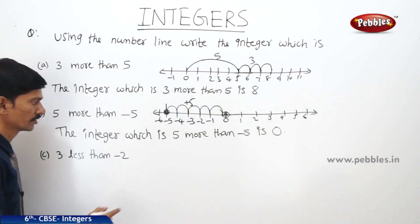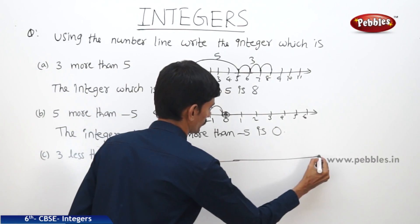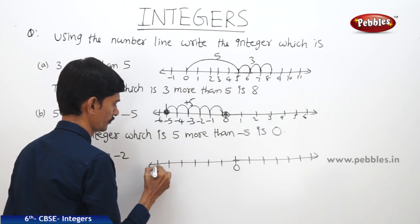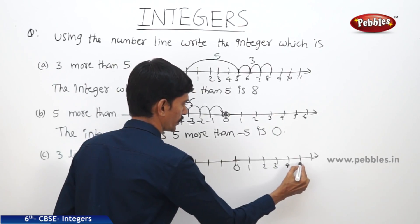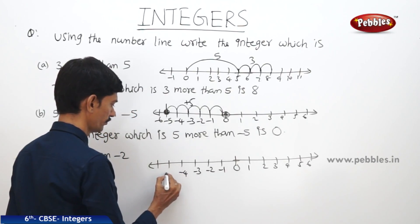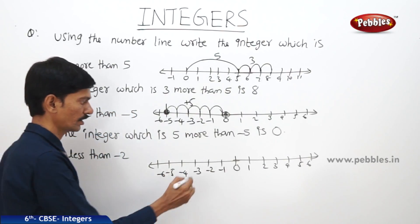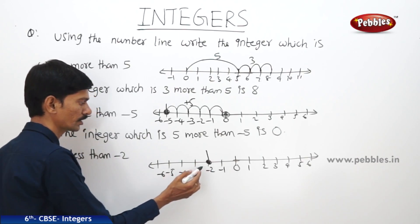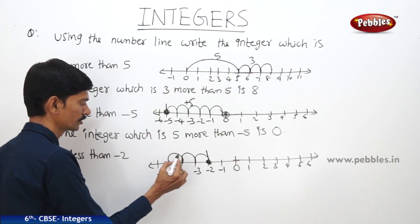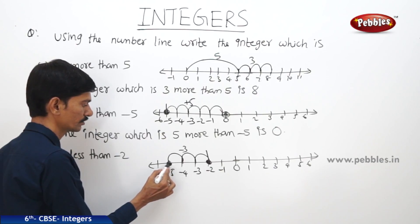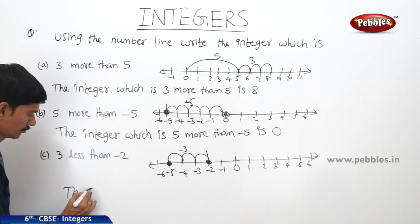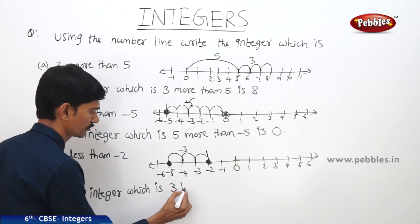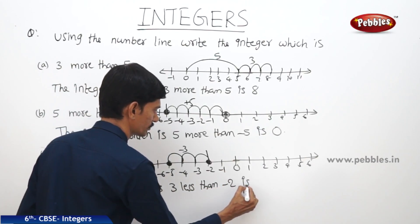Next: 3 less than minus 2. On the number line, we first represent minus 2. Then, 3 less than minus 2 means we have to move 3 steps to the left of minus 2 — 1, 2, 3 steps — and then we have reached at minus 5. Therefore, the integer which is 3 less than minus 2 is minus 5.